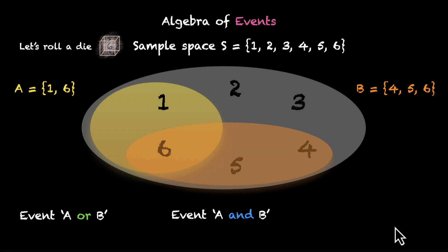The first one is event A or B. The second one is event A and B. And the third one is event A but not B. So, pause the video. Think about these 3 events.